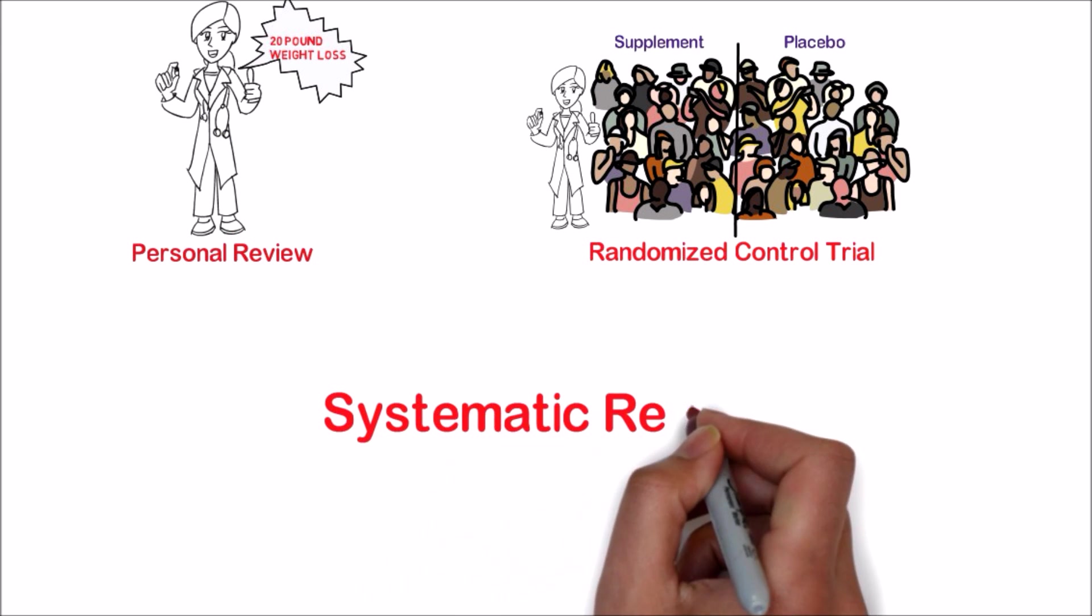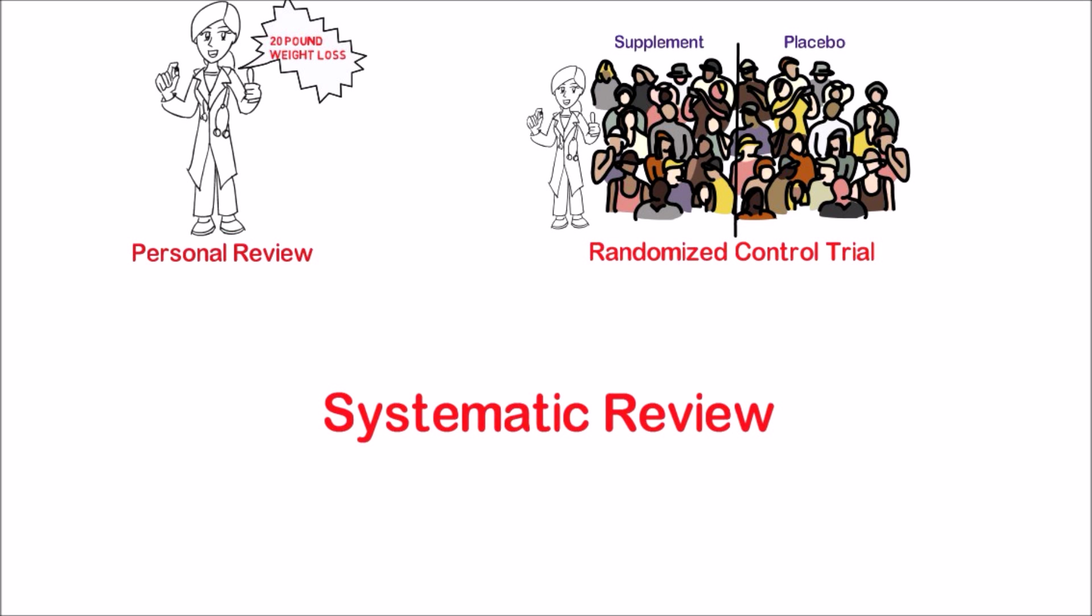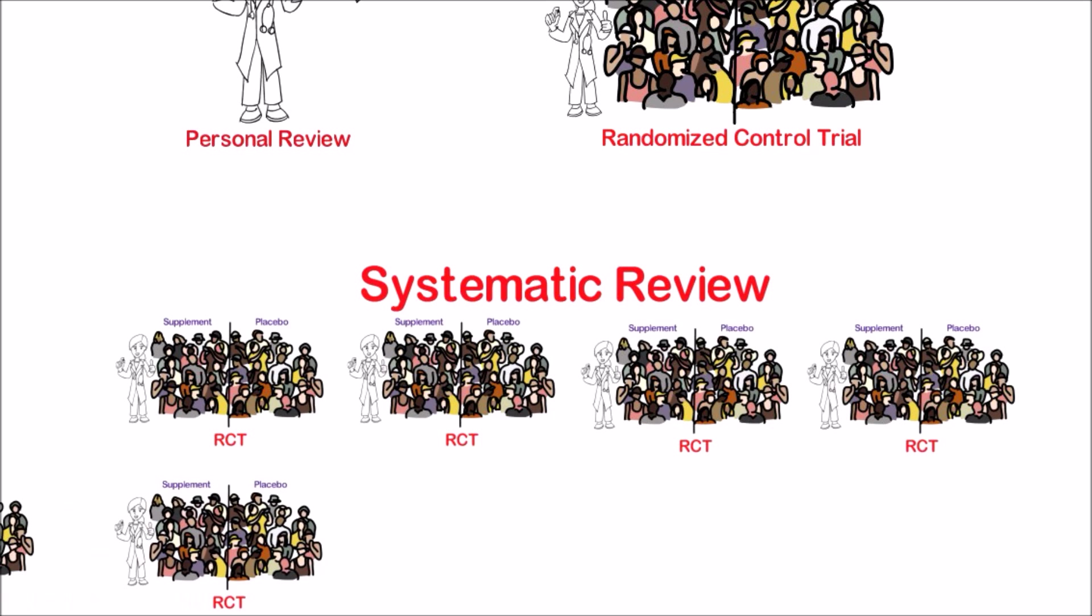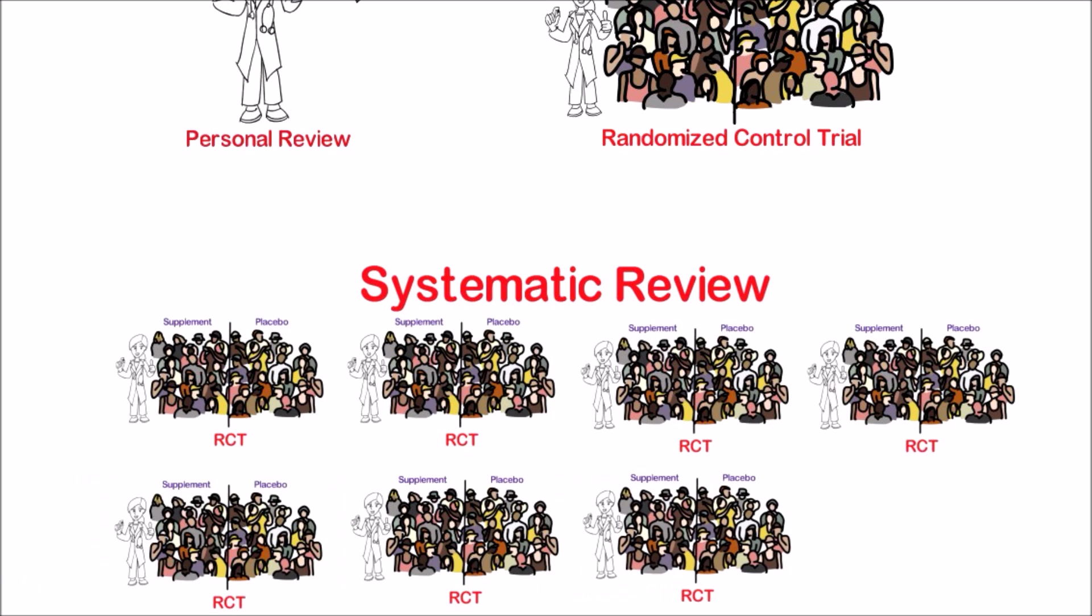If you take it one step further you have the systematic review in which they look at a whole bunch of randomized control trials. Now you're not just analyzing one group of people but multiple groups of people and you're seeing if each individual study gives you a similar result and then you analyze those results.